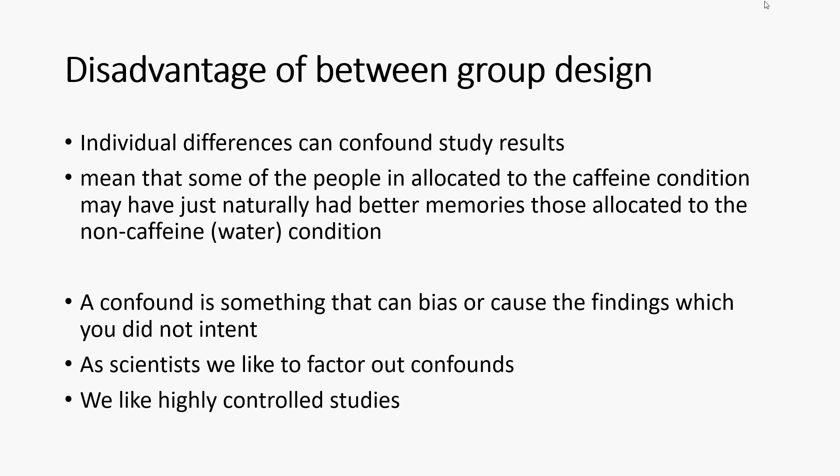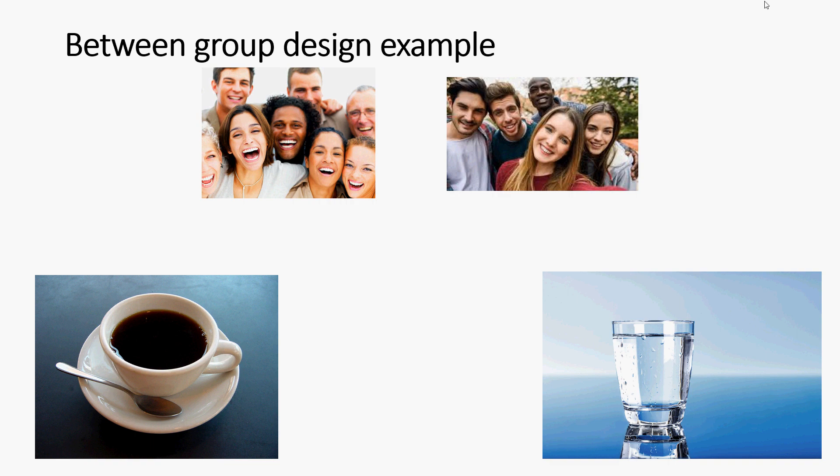This kind of bias is called a confound. A confound is something that can bias or cause the findings which you did not intend. As scientists we like to factor out confounds and prefer highly controlled studies, but even in highly controlled environments it's very difficult to eliminate all potential confounds. For example, group one might just have had naturally better memories.